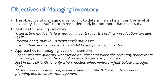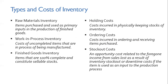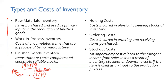What are the different types of inventory? There are three types. First is raw materials inventory — items purchased and used as primary inputs in the production of finished goods. Work in process are the costs of uncompleted items being manufactured. Finished goods are items that are 100% complete and constitute sellable stock. For example, if you're making diapers, paper is the raw material; once fed into the production line it becomes work-in-process inventory; once it comes out of the line ready for selling, it's finished goods.